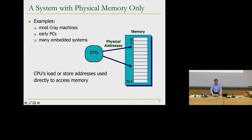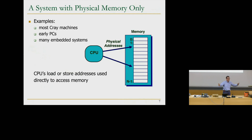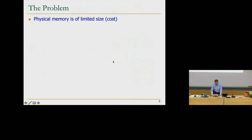Let's look at a system with physical memory only. Whenever you access memory from the CPU, you use a physical address, so there is no indirection and no translation. Old machines used to have that; many embedded systems still do. The load and store addresses directly access the physical location. If you have two programs loading from address zero and they're not supposed to share data — too bad, they conflict with each other, and somebody needs to ensure they don't.